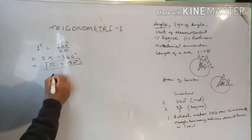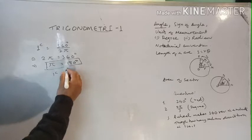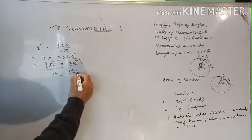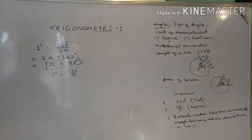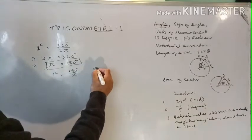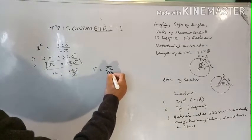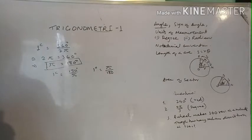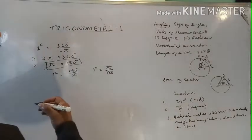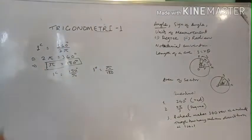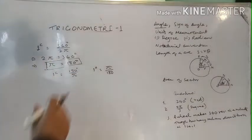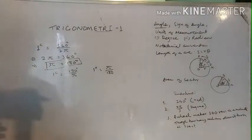From π radian = 180 degrees, we get: 1 radian equals 180 degrees divided by π. Similarly, 1 degree equals π divided by 180 radians. Using these, you can convert from radian to degree or from degree to radian.